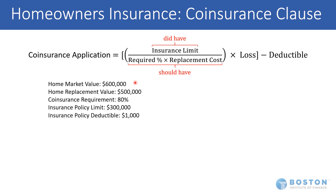All right, so we have to be given some facts in a question like this for the exam. We might see something like a home value of $600,000 market value, and the replacement value is $500,000. That's a very important number to look for because that's going into our application of the clause. The stated percentage is 80%, and that's probably what you'll see on any kind of problem, but just pay attention — make sure it's not something different.